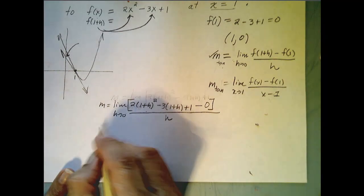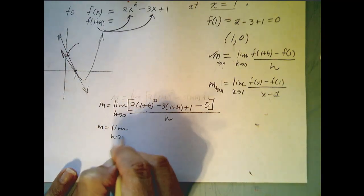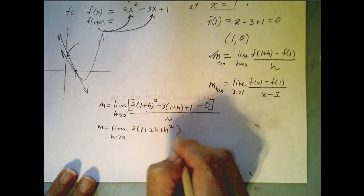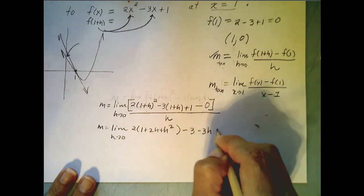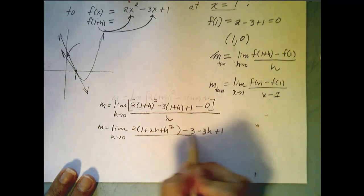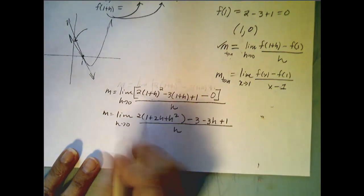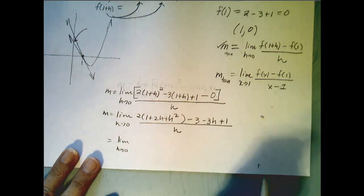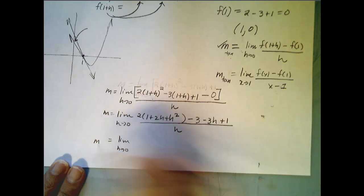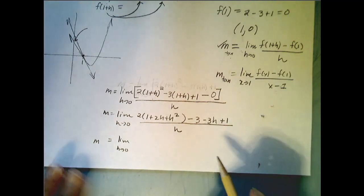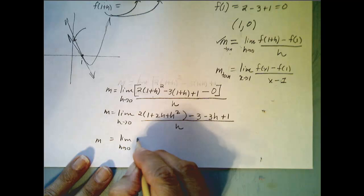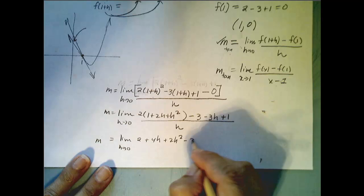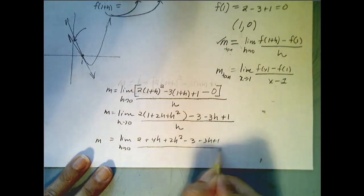This is the limit as h goes to 0, 2 times (1 plus 2h plus h²) minus 3 minus 3h plus 1 all over h. Now it's tempting to not write the limit every time and to just write the expression you're working with, but that's a bad habit to get into because then you're going to be equating things that aren't equal.